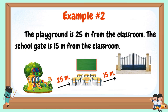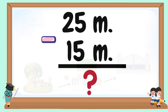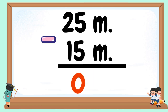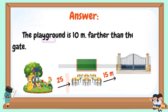Example number 2: The playground is 25 meters from the classroom. The school gate is 15 meters from the classroom. How much further is the playground than the school gate? 25 meters minus 15 meters. 5 minus 5 equals 0, 2 minus 1 equals 1. The playground is 10 meters farther than the school gate.